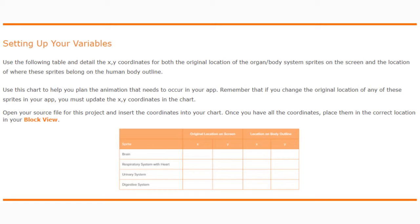Remember that if you change the original location of any of these sprites in your app, you must update the XY coordinates in the chart. We're going to need to open our source file for this project and insert the coordinates into the chart. Once you have all the coordinates, we will then go ahead and place them in the correct location in our block view.